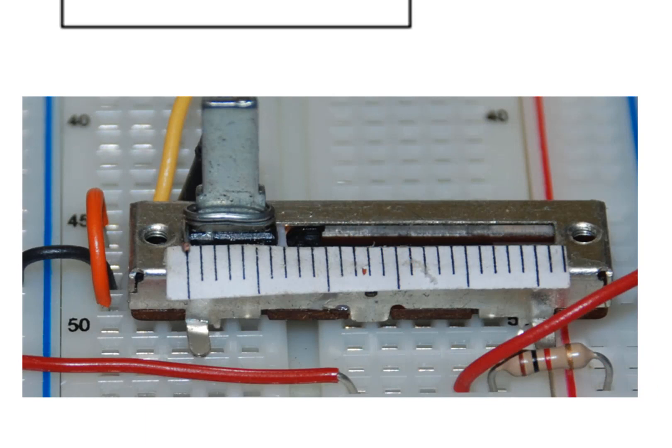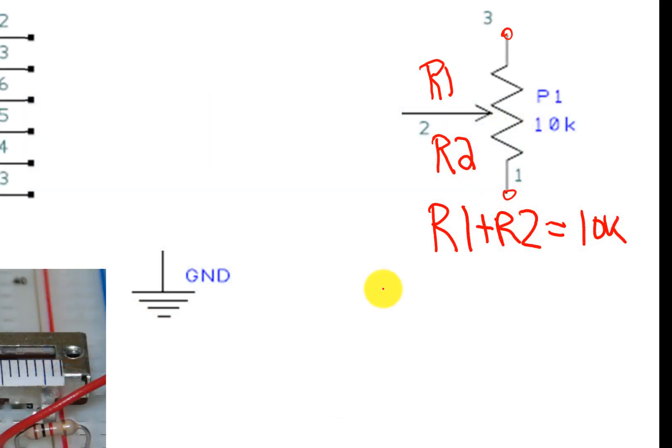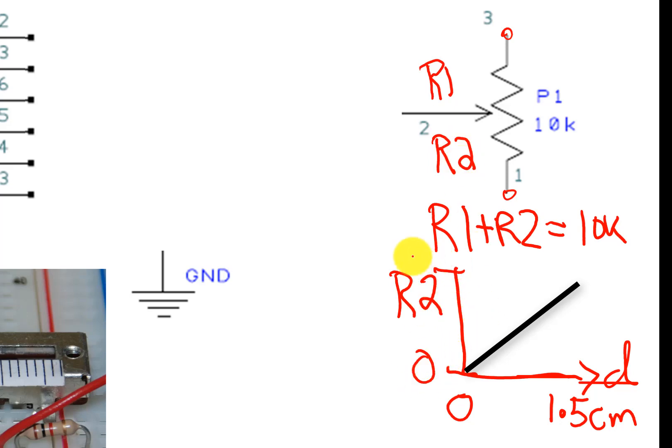The way this particular thing works is R1 plus R2, that sum, is always equal to 10,000. But as it varies, remember the distance here, the distance in the slide pot, as that varies, it will affect R2. And so if you were to draw a plot of R2 as a function of distance, this is why it works. That's why it's called a transducer. Again, the distance is going to vary from 0 to 1.5 centimeters. And as it does, the resistance between 2 and 1, which is defined as R2, will vary between 0 and 10,000.